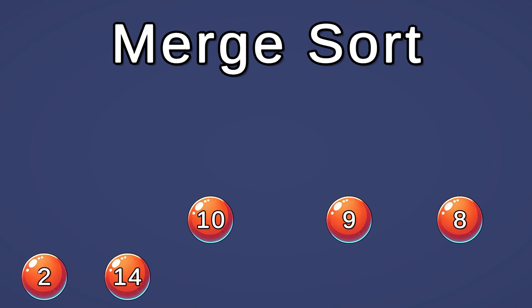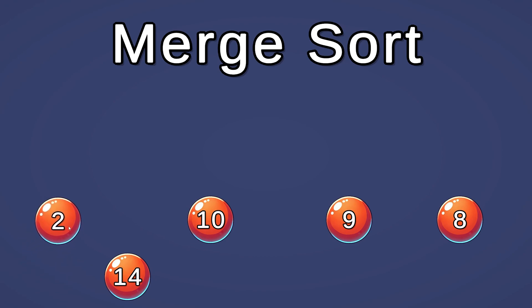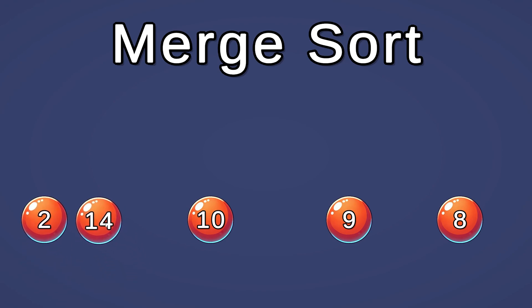An array of size 1 is considered to be a sorted array. So we can start merging these sorted arrays. 2 is smaller than 14, so it's going to go first, and then we put 14.